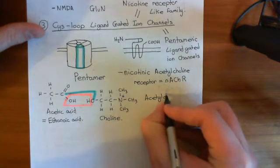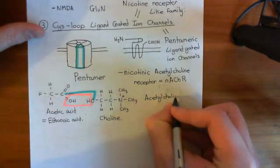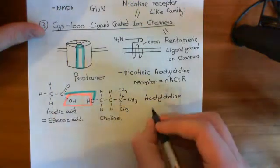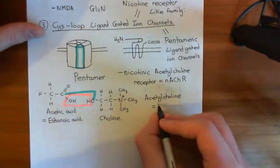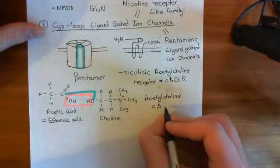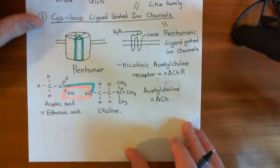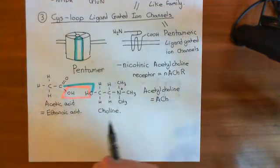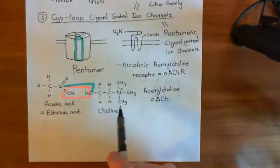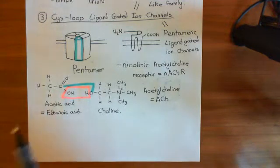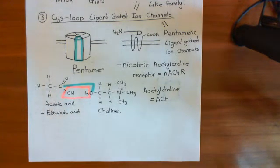Acetylcholine is the endogenous ligand — meaning the one found in the body — for nicotinic acetylcholine receptors. When a neuron releases acetylcholine into the synaptic cleft, the acetylcholine diffuses across and binds to nicotinic acetylcholine receptors, causing them to open.